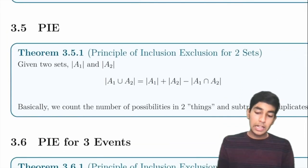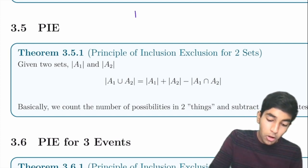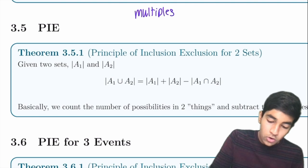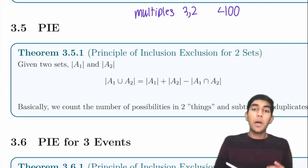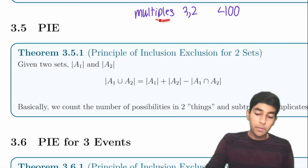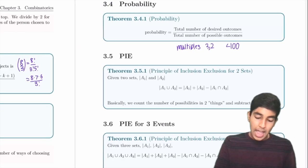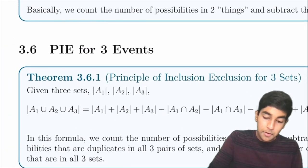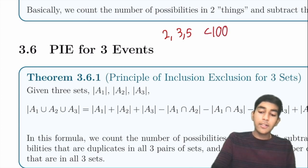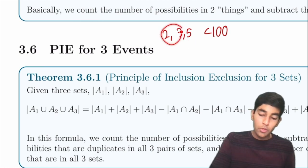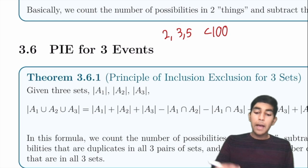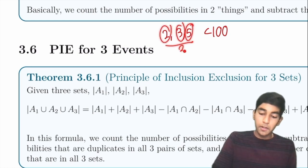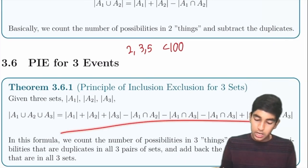Principle of inclusion-exclusion: to find the number of multiples of 2 or 3 less than 100, find multiples of 2, plus multiples of 3, minus multiples of both. For three sets (e.g., multiples of 2, 3, or 5), add the three individual counts, subtract the pairwise overlaps, then add back the triple overlap (multiples of 30).